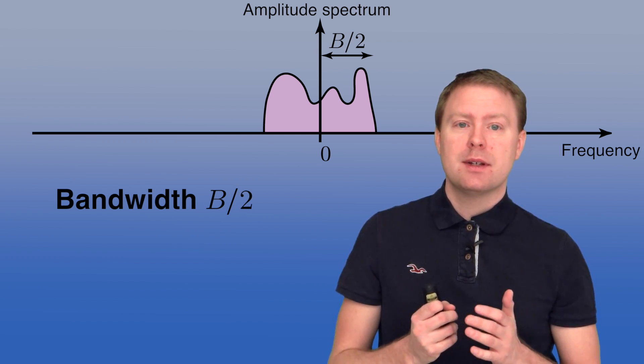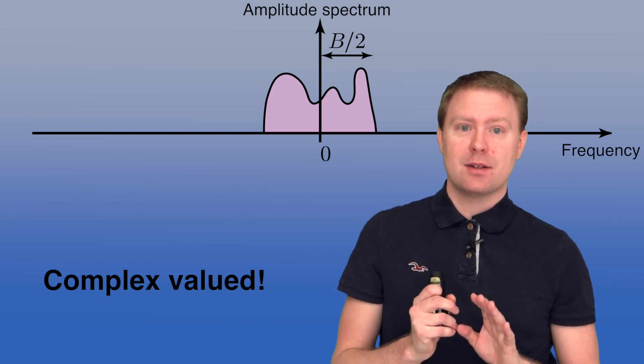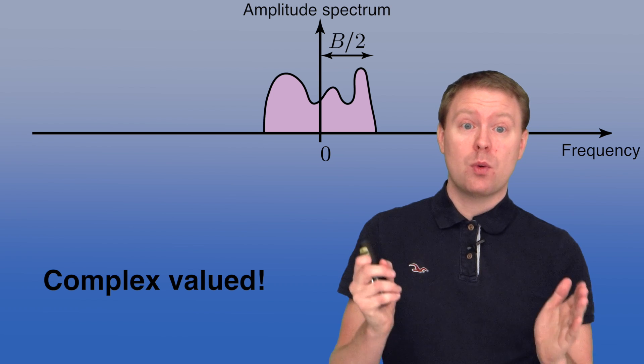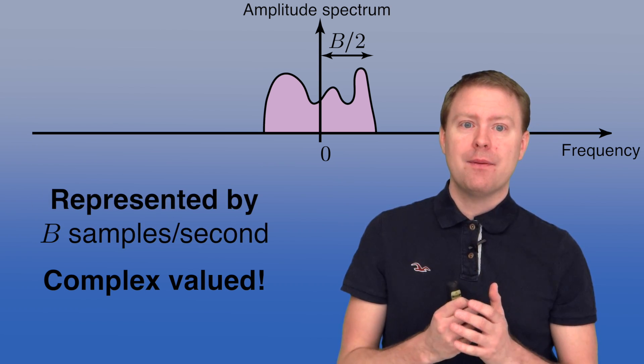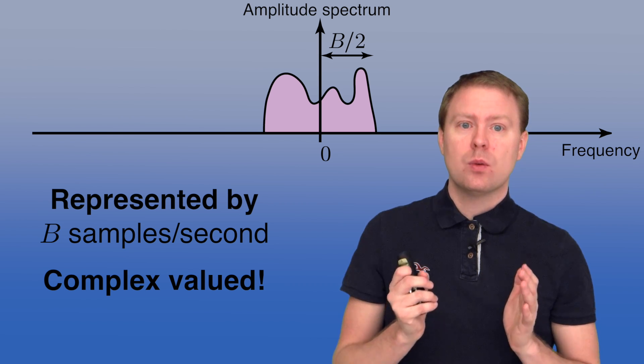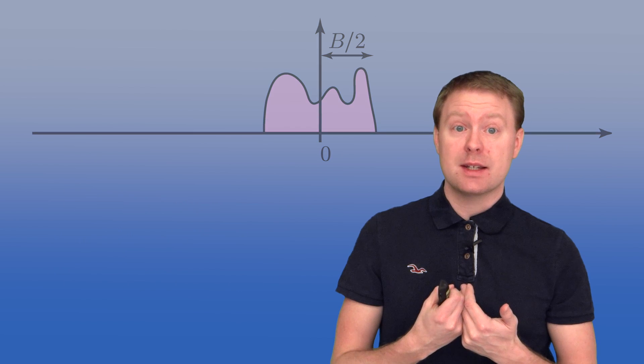However, the signal will be complex valued because real valued signals need to have something in the frequency domain that is symmetric around zero, which is not the case here anymore. So we have a signal with half of the bandwidth but it's complex valued, so no information is actually disappearing.